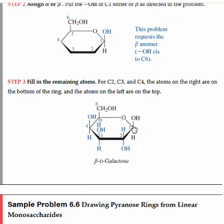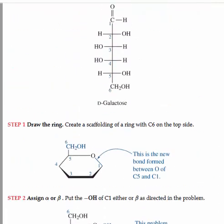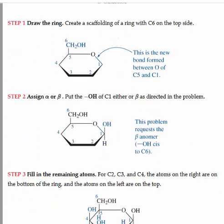So carbons 1 through 4 will each have one hydrogen and one hydroxyl. For the anomeric carbon, carbon 1, we have to be told whether it's beta or alpha. And then for carbon 2, 3, and 4, we just look to our Fischer projection. Whatever is on the left goes above the plane, and whatever is on the right goes below the plane of the ring.